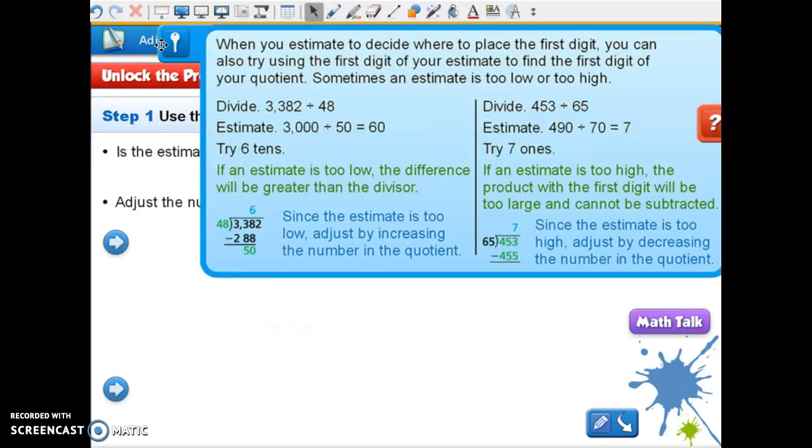So we're going to try 6 as our first number. We're going to multiply, and 6 times 48 is 288. When I subtract that I get 50. Well, 50 is larger than 48, so that doesn't work. We would have to go to 7.